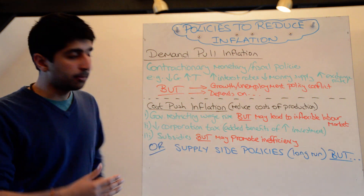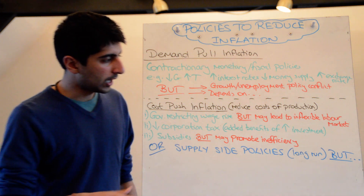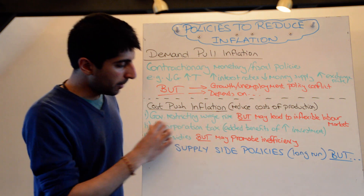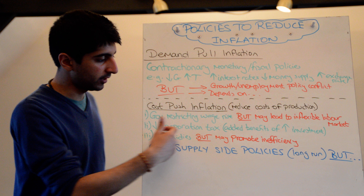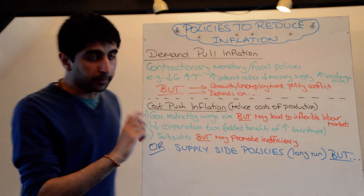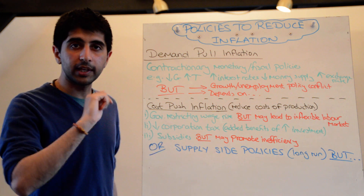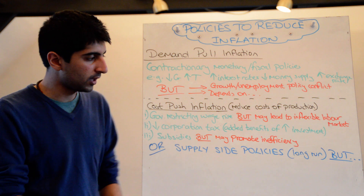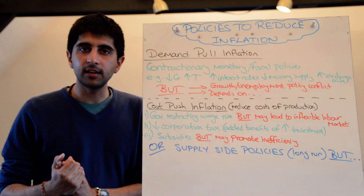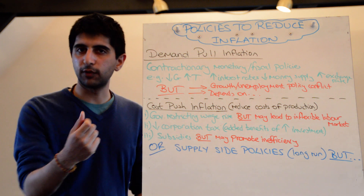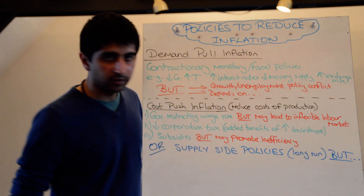Another approach is to reduce corporation tax, which reduces the costs of production for firms and has the added benefit of increasing investment — though your standard supply-side issues apply. You can also subsidise firms to promote R&D or for other reasons, which lowers costs of production. But subsidies might promote inefficiency, as firms can rely on them rather than cutting waste, and they are very costly with no guarantee of working.